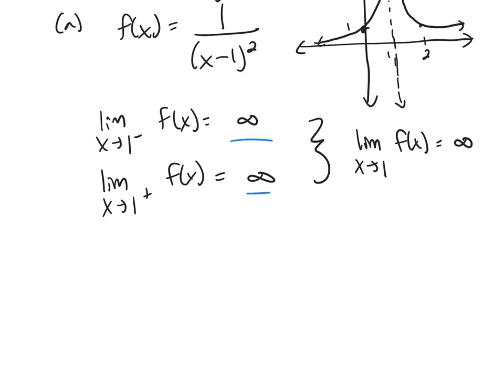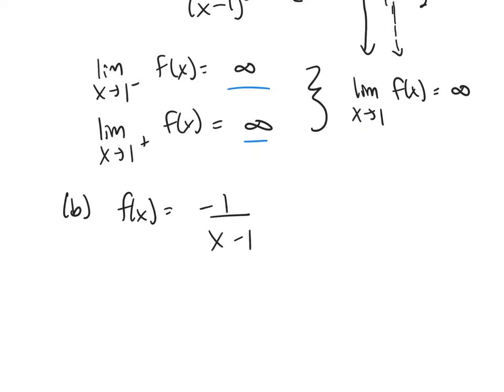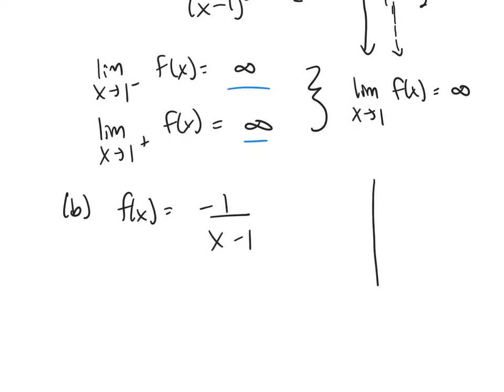All right, let's look at one more. Let's look at this next function. It'll be negative 1 over X minus 1. So again, if you ask your calculator or your program to graph this function, you should get the following picture.